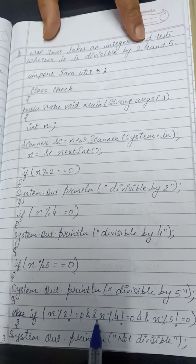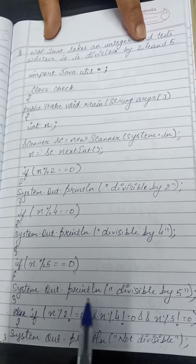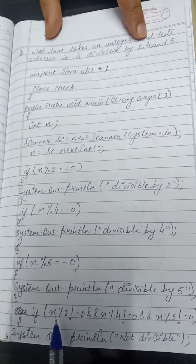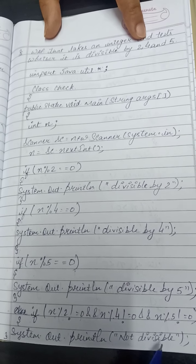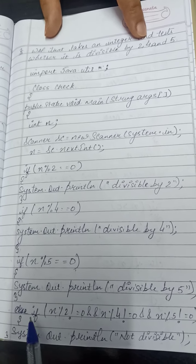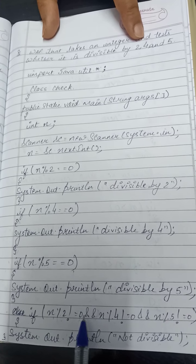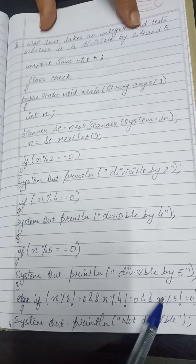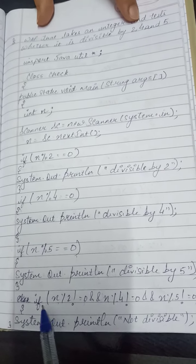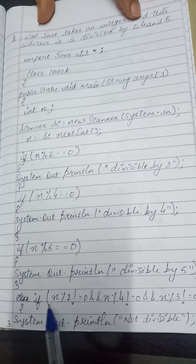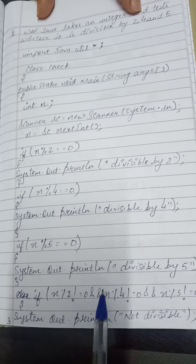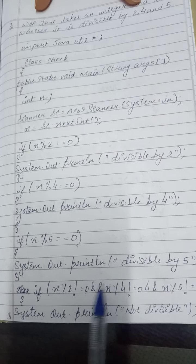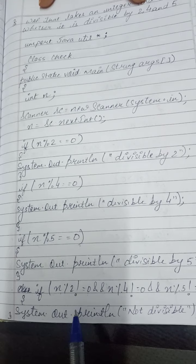— we use the logical AND operator here. The AND operator requires all conditions to be true for the block to execute. So if n modulo 2 is not equal to 0, AND n modulo 4 is not equal to 0, AND n modulo 5 is not equal to 0, all three conditions must be true for this if statement to run.